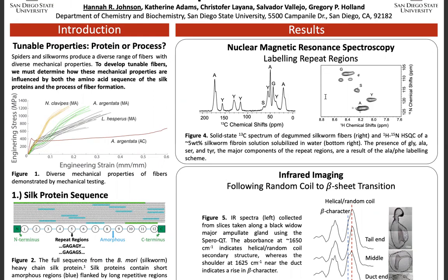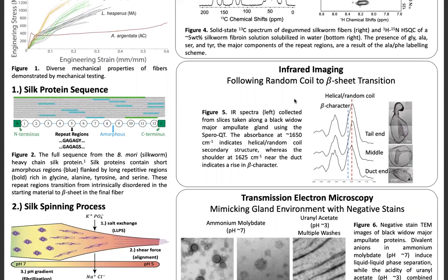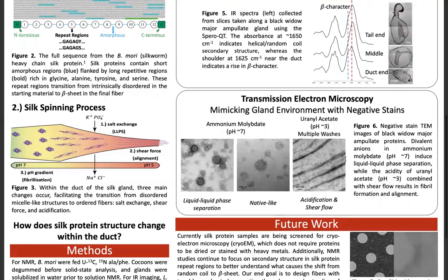Next, I looked at the random coil to beta sheet transition using infrared imaging. To do this, I fixed spider glands with glutaraldehyde and then sectioned them. You can see the sections near the tail end, where the proteins are formed, have more helical random coil structure, and then as you go toward the duct end, you see this little shoulder form, which indicates the presence of beta character.